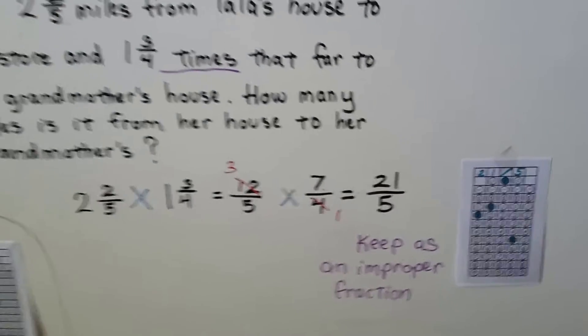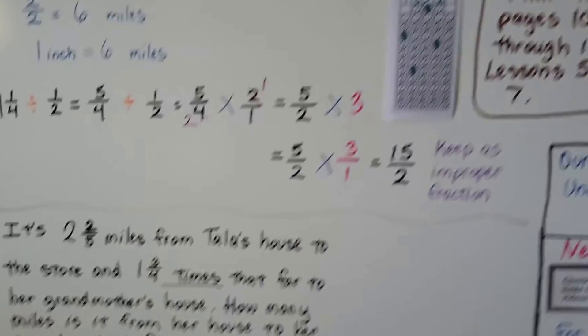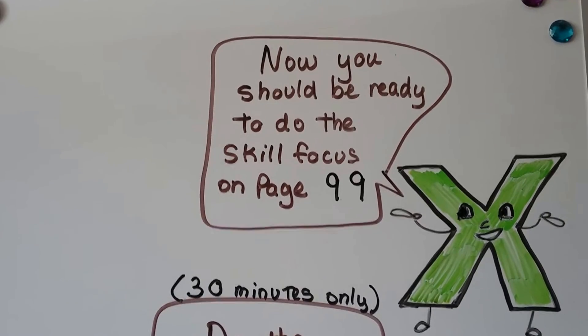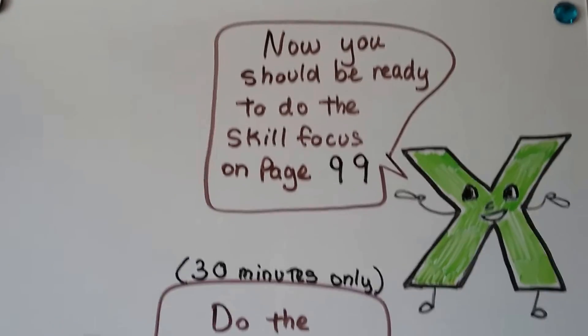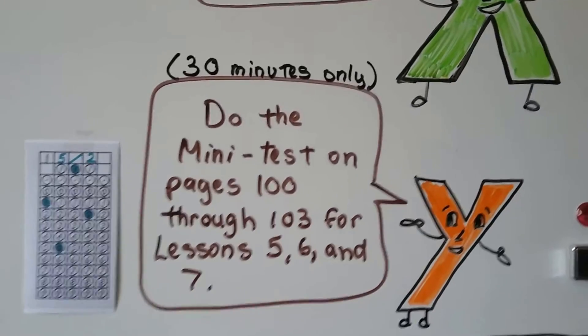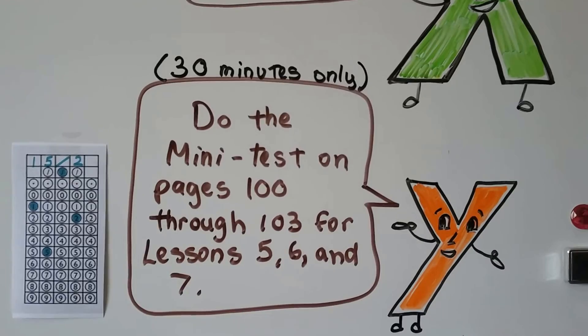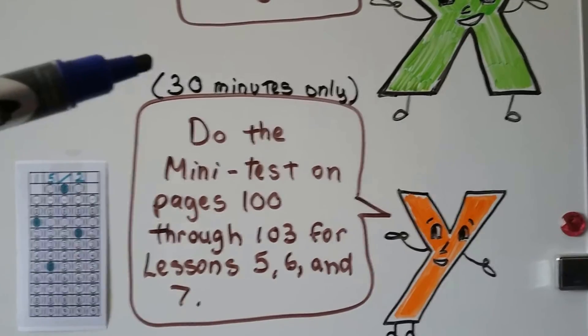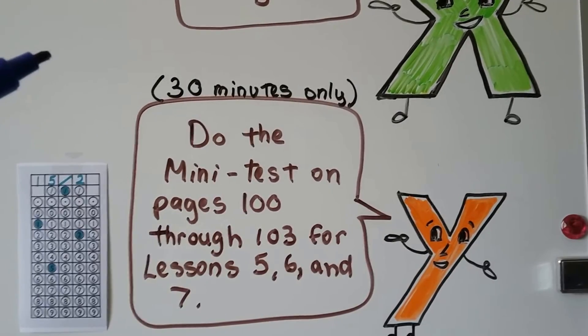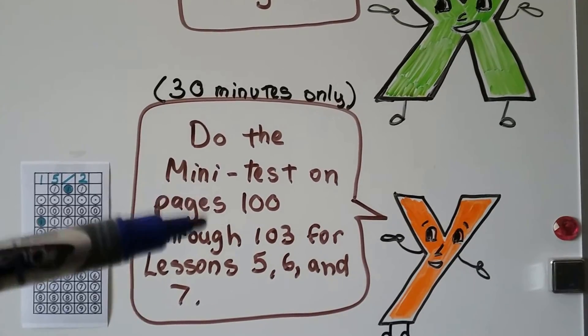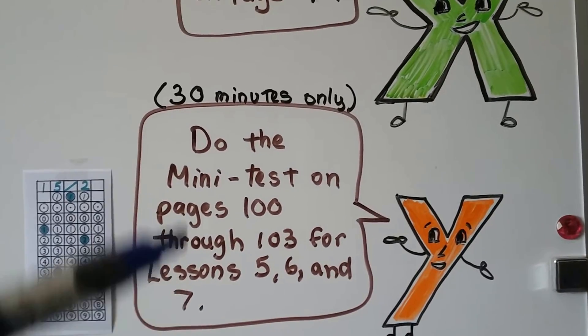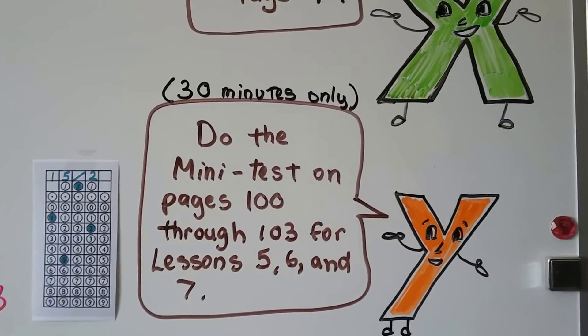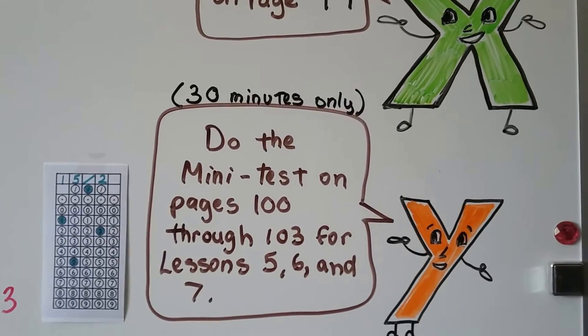I know this can be confusing, so if you watch it a second time, that's no big deal. But you should be now ready to do that skill focus on page 99, and it actually has examples for you to do. When you're finished with that, if you feel good about it, you can do that mini test on pages 100 through 103 for lessons five, six, and seven. But read the instructions. It says you've only got 30 minutes, so look at the clock or set a timer for 30 minutes to see how many you can answer in that 30 minutes, because that is going to give you a good judge of how you're going to do on the GED test.